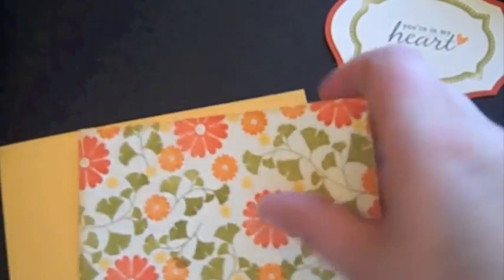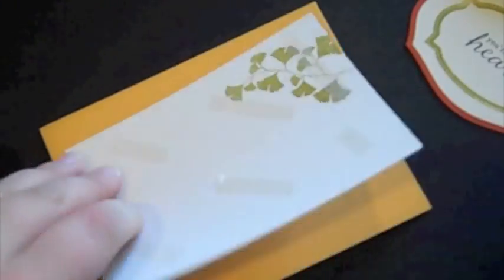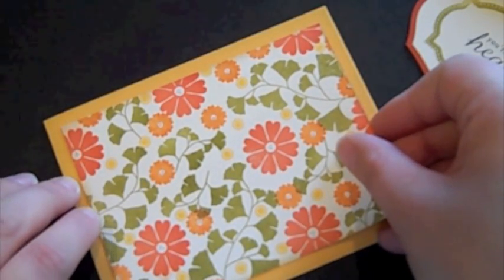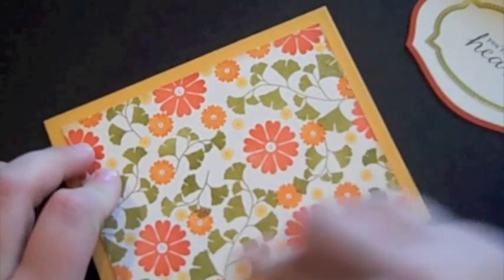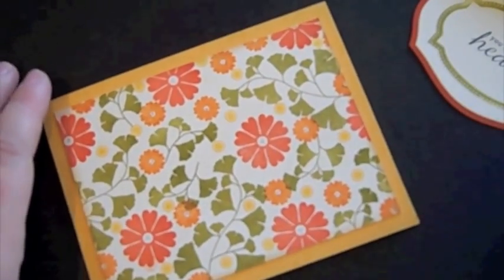I'm going to set that to the side. I have a Summer Sunrise A2 card base that I created with the crease at the center, so it folds this way. And I'm going to adhere the patterned paper that we created ourselves directly to the front. And I did edge the Summer Sunrise card base with the Chamomile Tea dye as well, just to soften it a little bit.